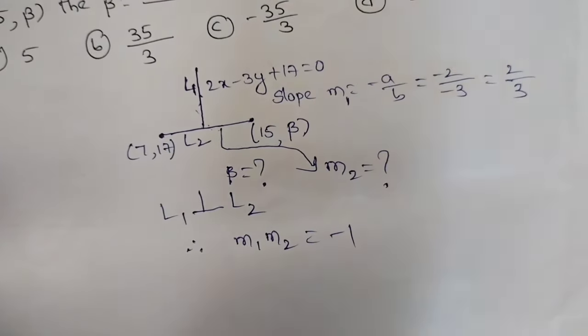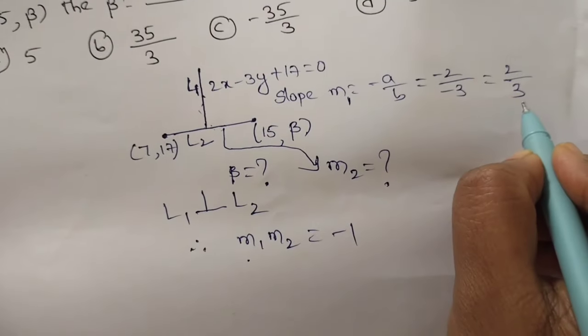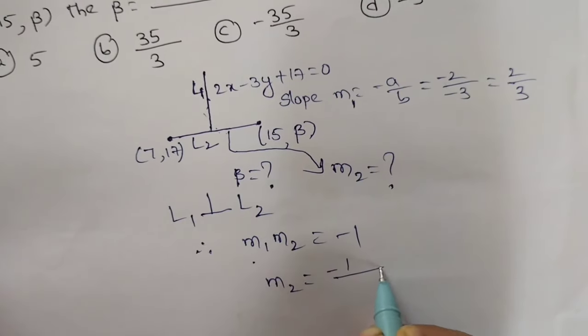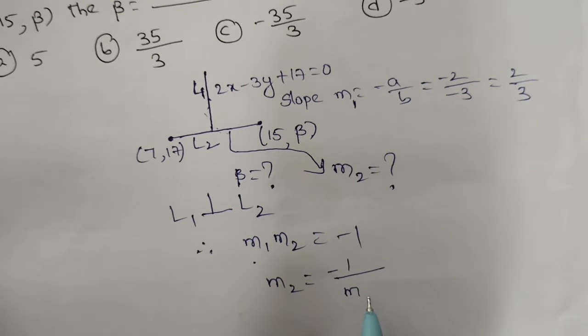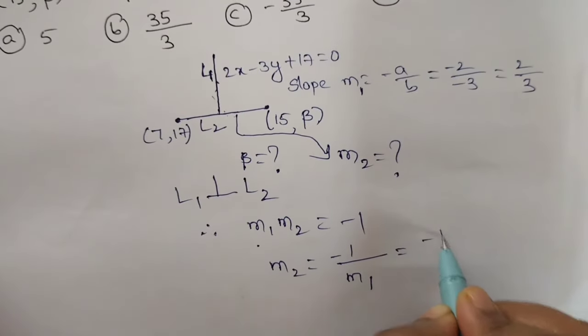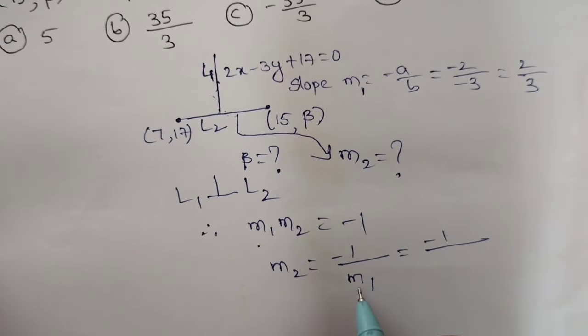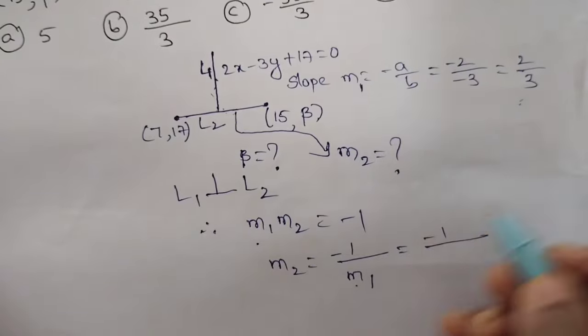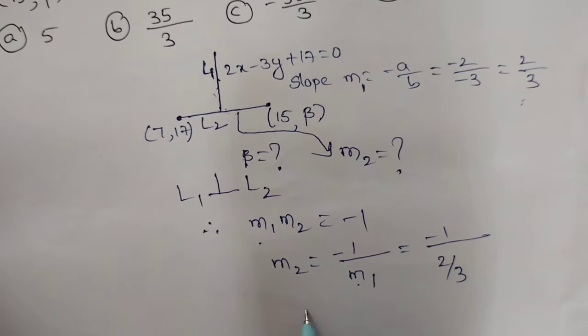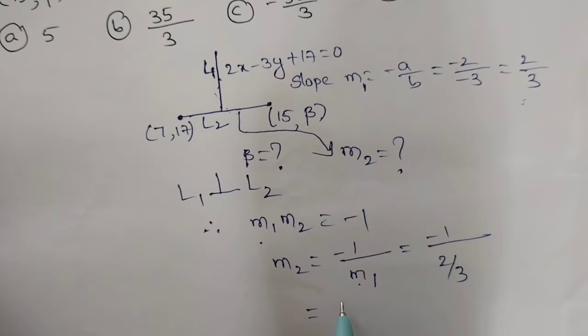We know m1 value is 2/3. m2 equals minus 1 by m1. So now write m1 value: minus 1 by (2/3). Now m2 is minus 3/2.